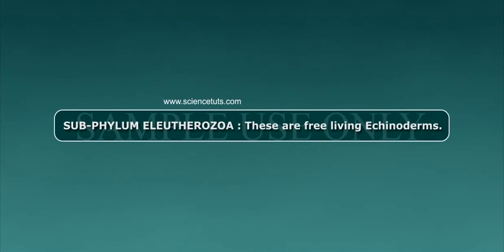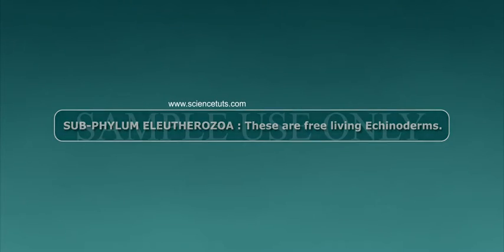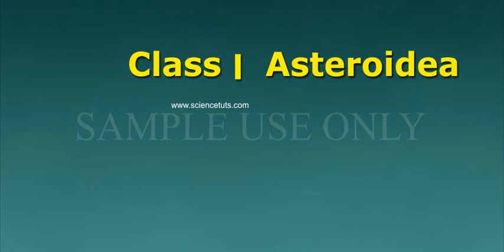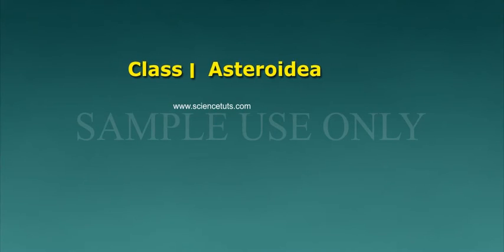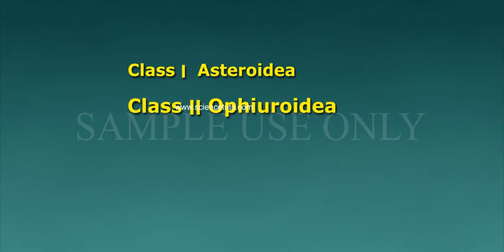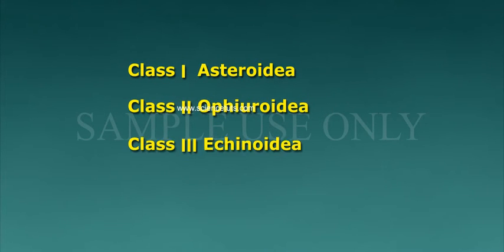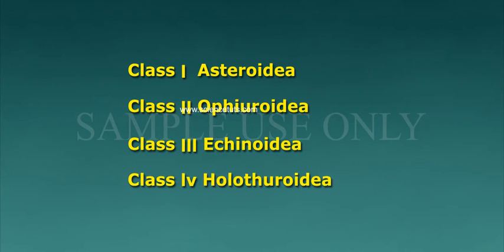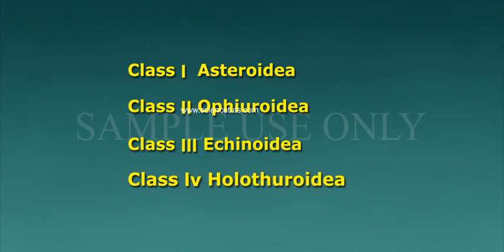Subphylum Eleutherozoa: these are free-living echinoderms. Eleutherozoa includes four classes — Class 1: Asteroidea, Class 2: Ophiuroidea, Class 3: Echinoidea, and Class 4: Holothuroidea.